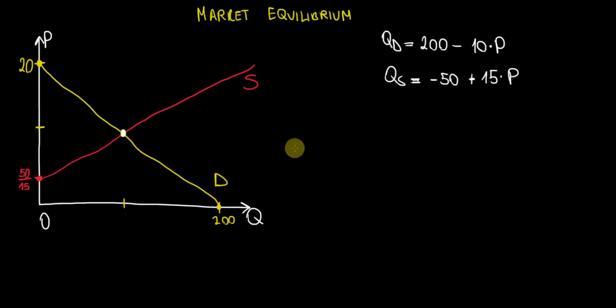In this video I would like to show how we can achieve the market equilibrium. Basically how can we get to the equilibrium quantity and price. So what does that mean?